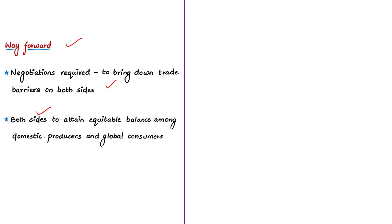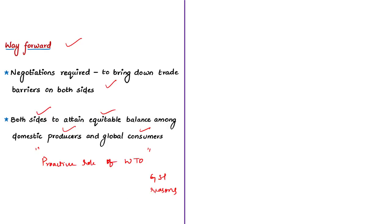Another solution suggested by the author is that trading partners should achieve an equitable balance between their domestic producers and global consumers — ensuring domestic producers are protected while consumer interests are not compromised. This will require a proactive role to be played by the World Trade Organization as well. To summarize, this analysis covered the GSP program of the US, various reasons the US accused India to declare it a developed country, and how the US announcement will distort global trade.